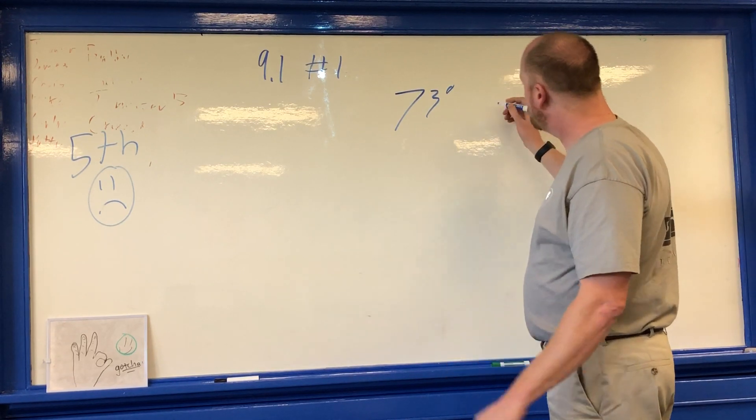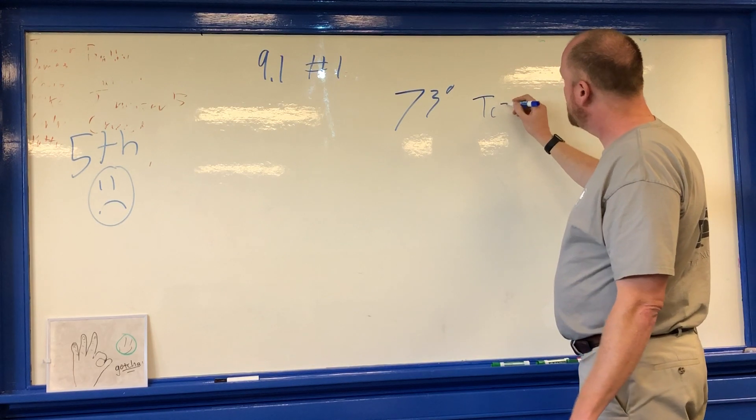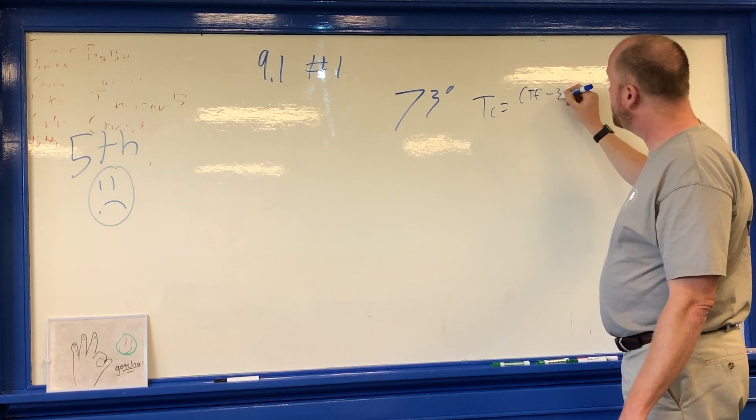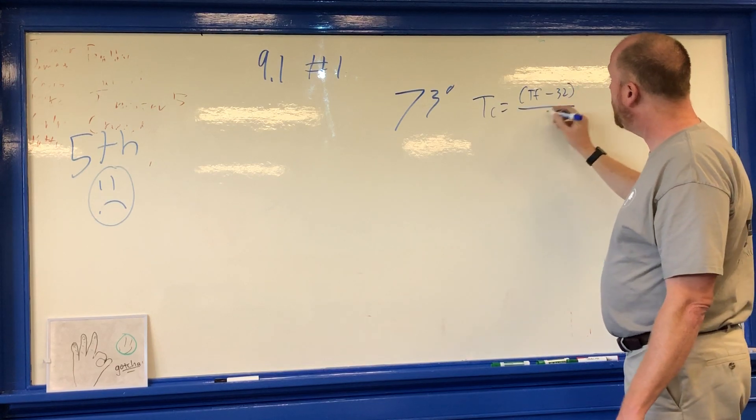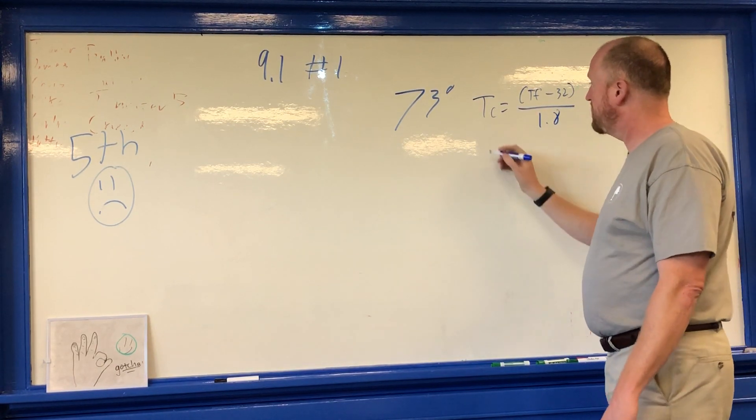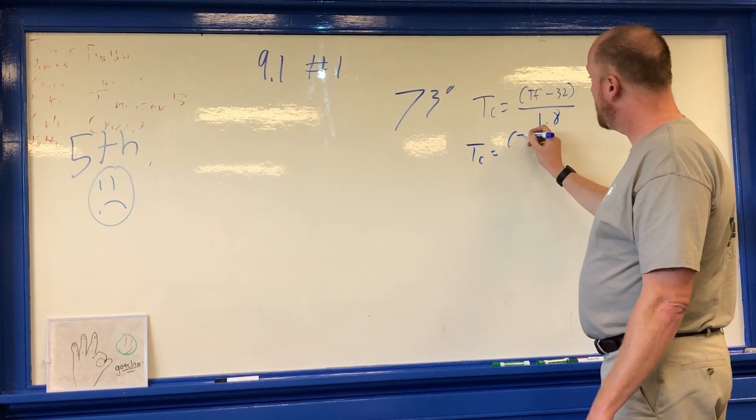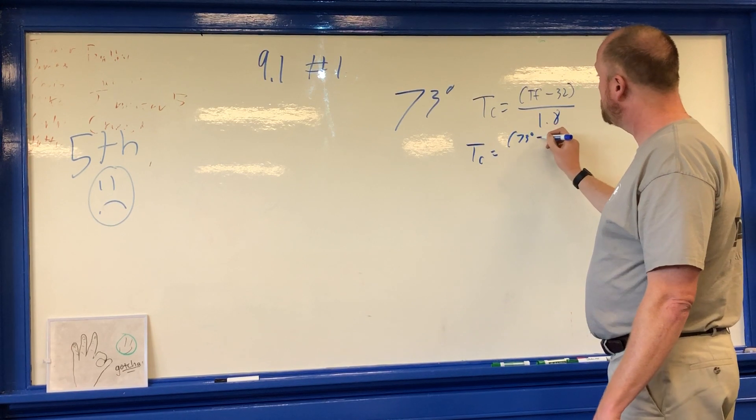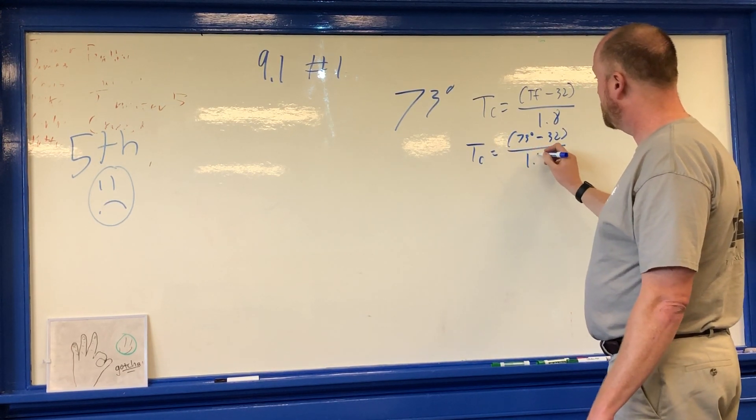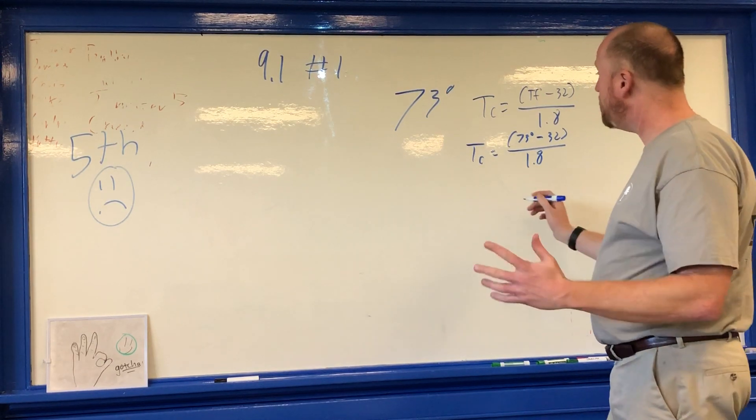Now the formula is this. The temperature in Celsius is equal to the temperature in Fahrenheit minus 32 degrees over 1.8. So let's get started here.